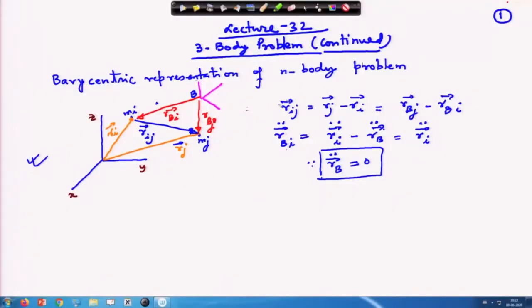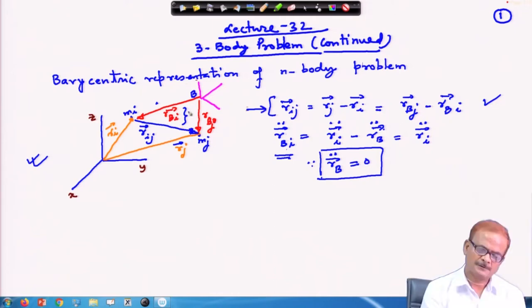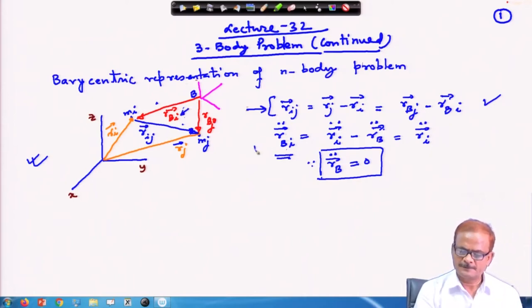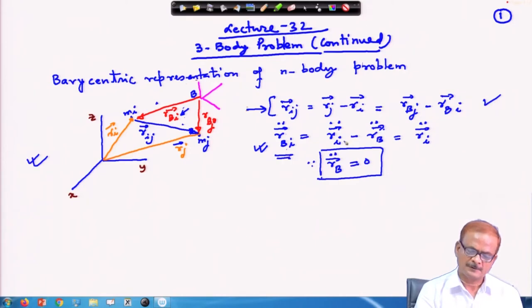Here r_ij, as shown in this equation, equals r_j minus r_i, which equals r_bj minus r_bi. This we have already written in the last lecture. Moreover, r_bi — the quantity shown by this symbol — its double dot means it is a second derivative with respect to time.